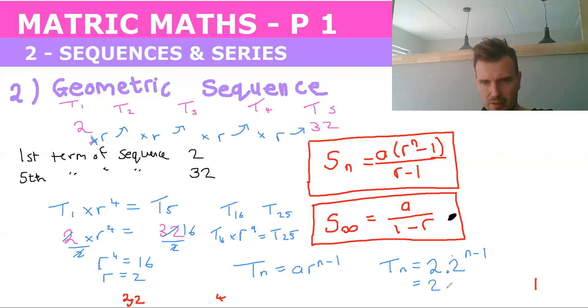And this two you can break up into 2^n multiplied by 2^(-1). Now from our exponent laws we know that 2^(-1) is the same as one over 2^(+1). Two times a half is one, and so Tn equals 2^n.